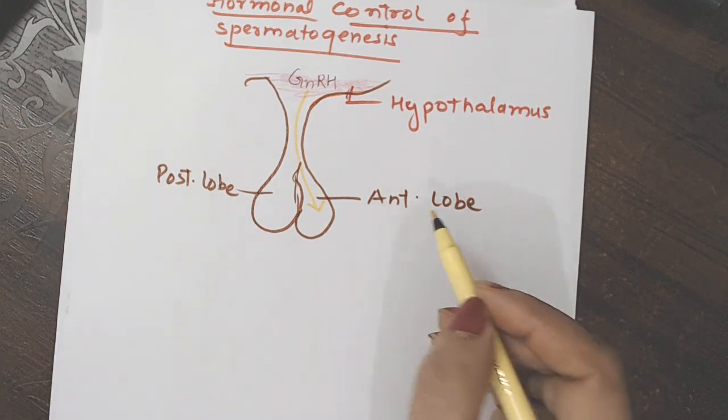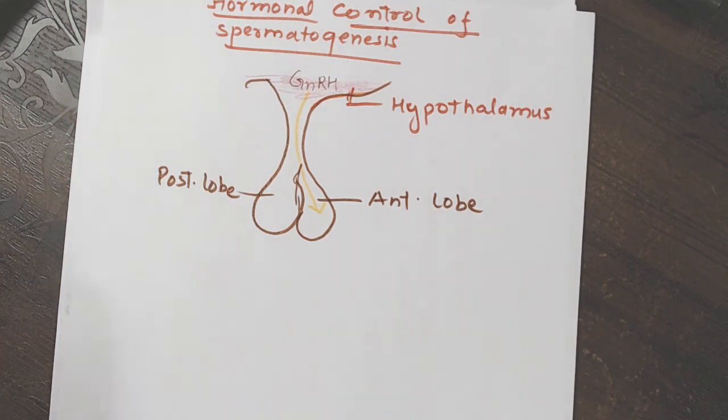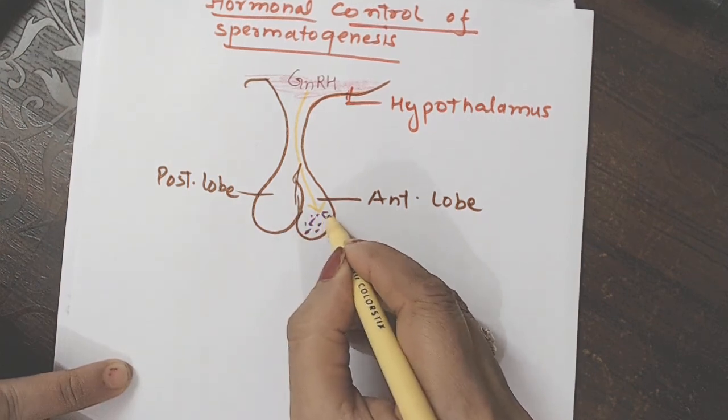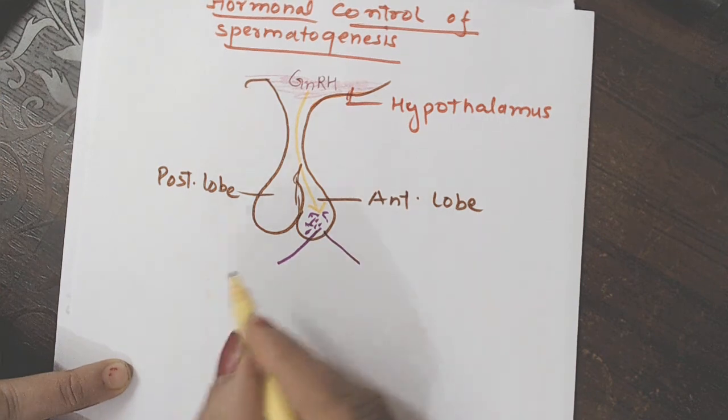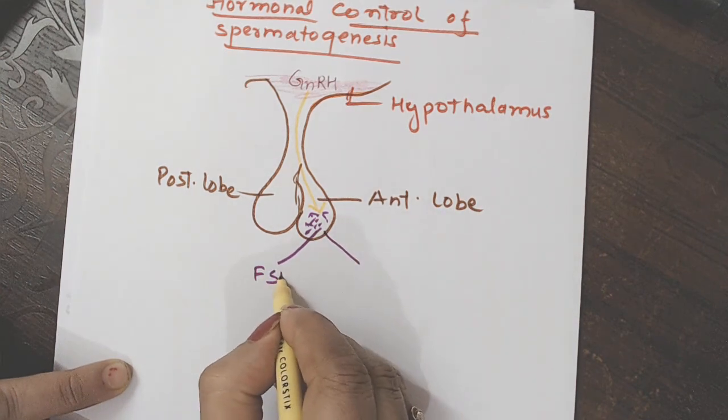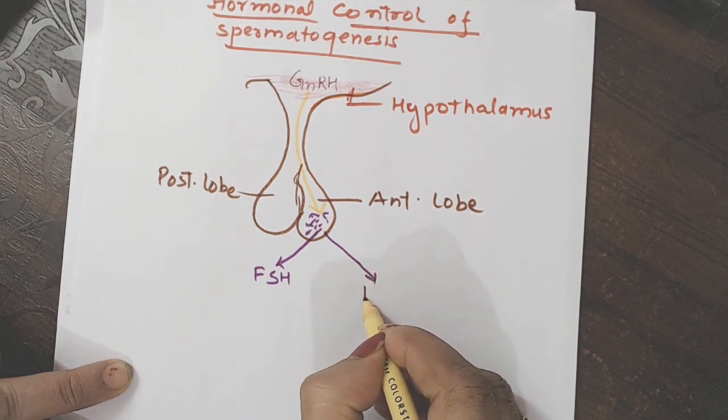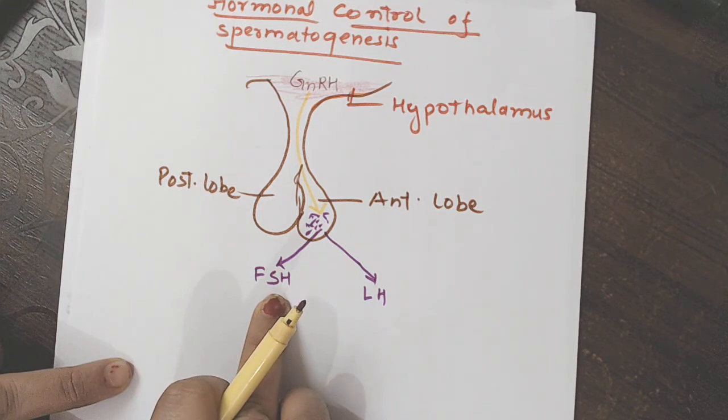LH that is luteinizing hormone and FSH that is follicle stimulating hormone. Getting na? Toh pituitary se phir 2 hormone release honge. What are those 2 hormones? These are the anterior lobe pituitary ki cells. Jo stimulate ho gai. And they have 2 hormones release kiya. FSH and second is LH.